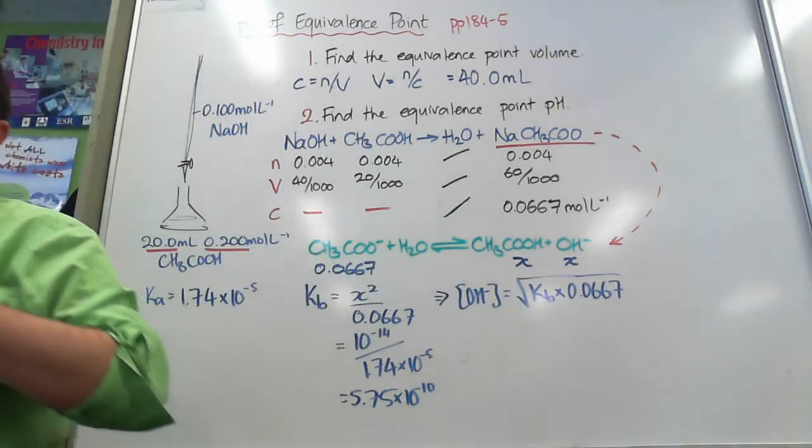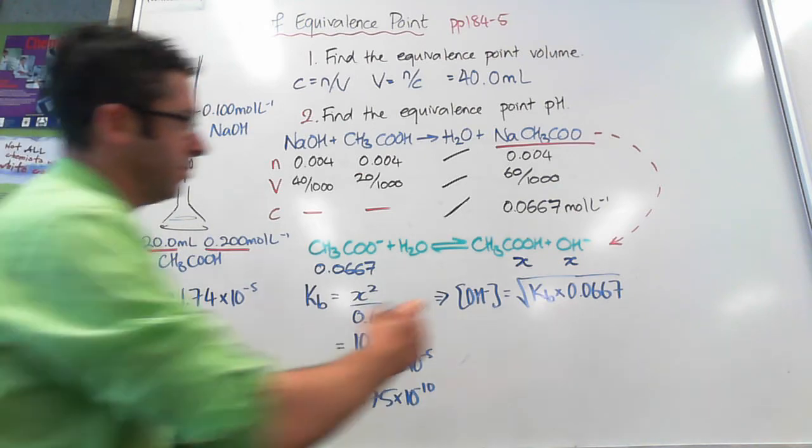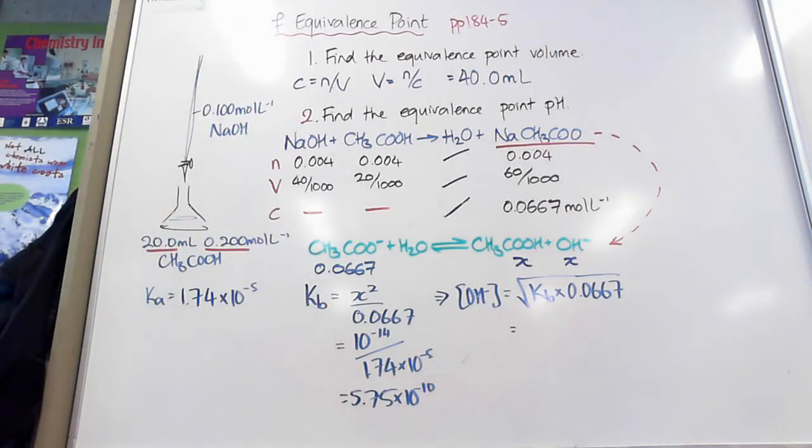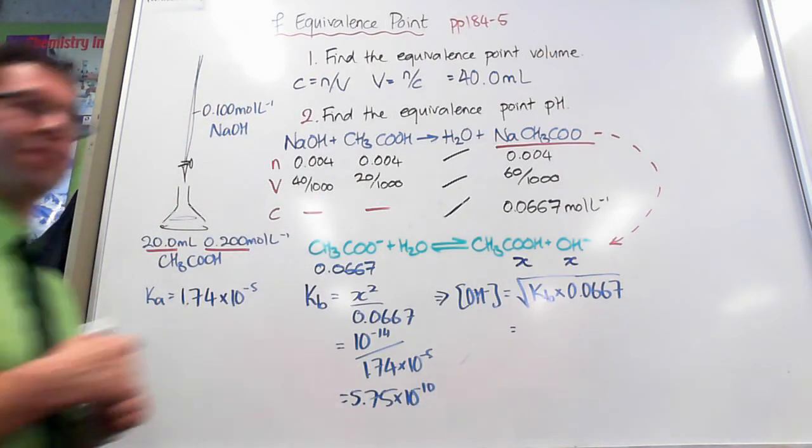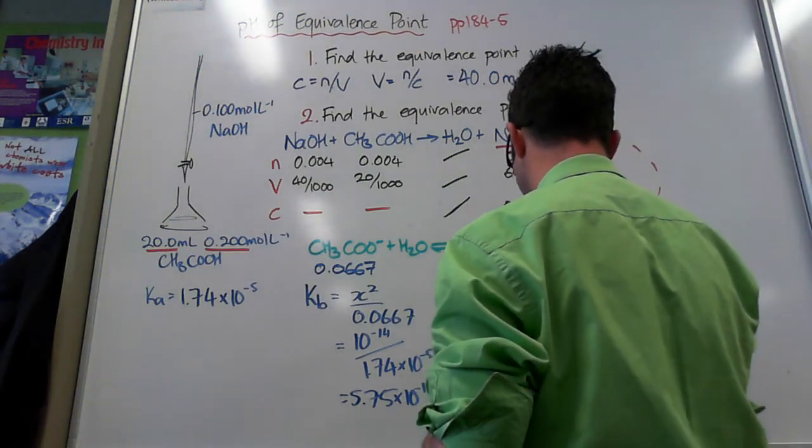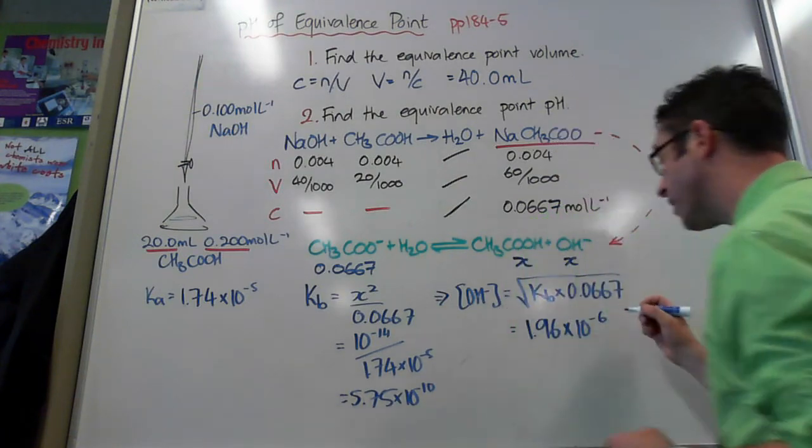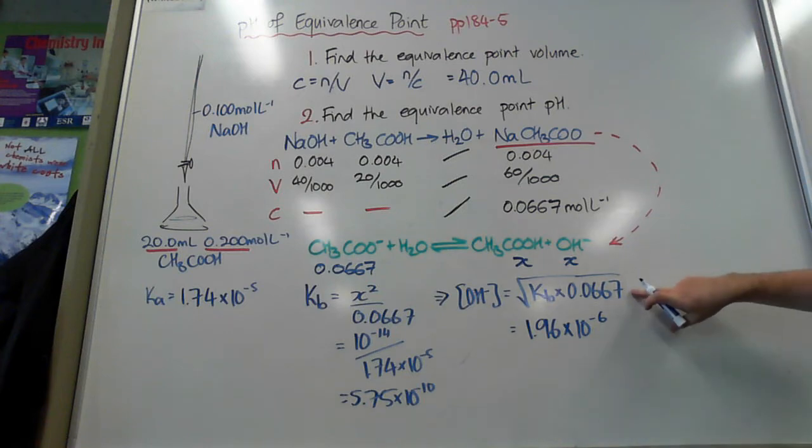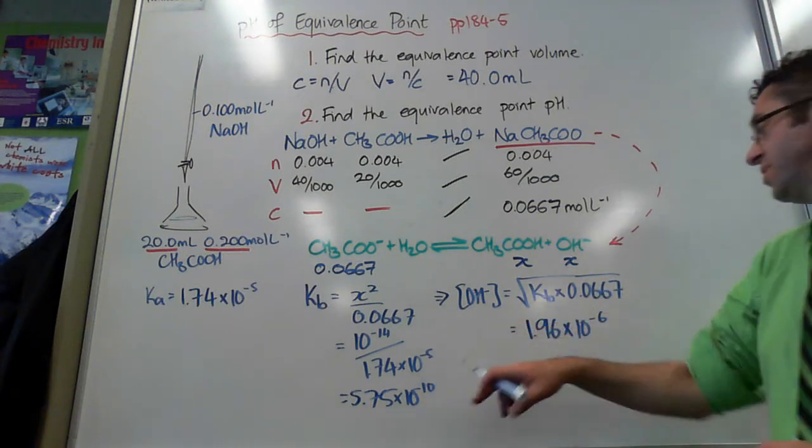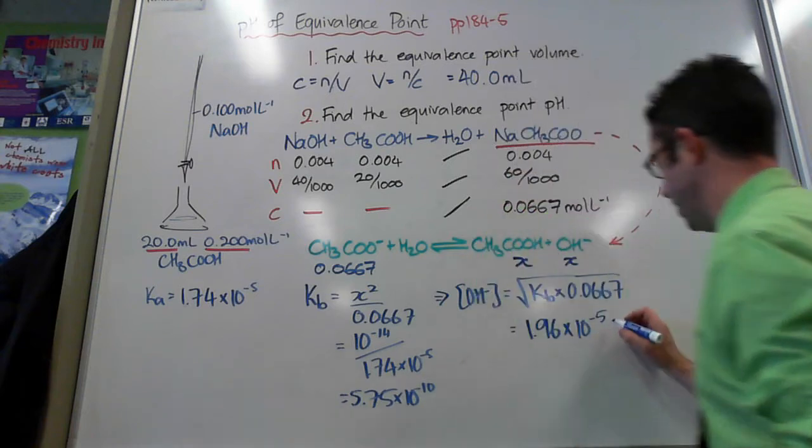And that will give me my value there, 5.75 times 10 to the negative 10. So we plug that number into our calculation there. So this number times this number equals square root equals, and we'll have our hydroxide ion concentration. It's very small, 1.96 times 10 to the negative 5. Because that's pretty close to 0.1, so it'll be about a tenth of that. And that's moles per litre.